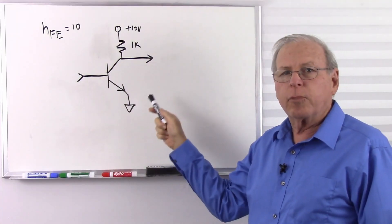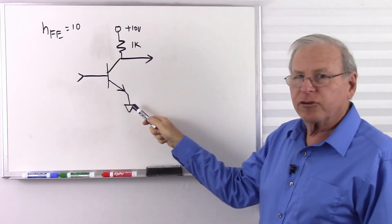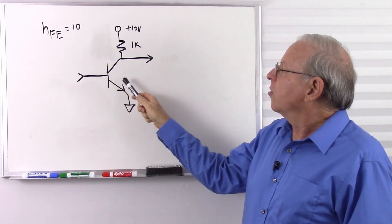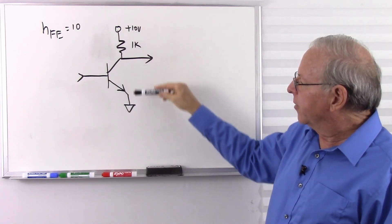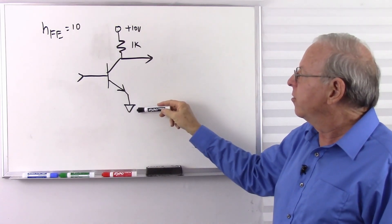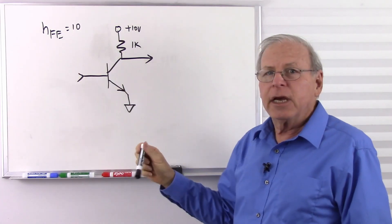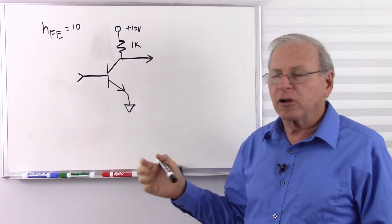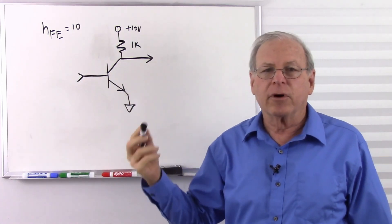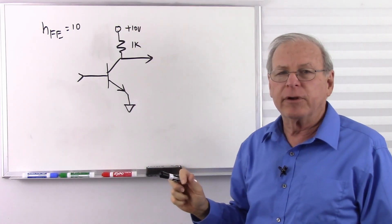Here's a circuit where saturation is important in electronics. It is a common emitter amplifier made with a bipolar junction transistor. It is an NPN transistor, so we expect the power supply to be more positive on the collector than on the emitter. We have a 10 volt power supply — plus 10 volts on the collector side, 0 volts on the emitter side. The transistor has an HFE of 10, which is the ratio of base current to collector current, so we expect the collector current to be 10 times the base current.